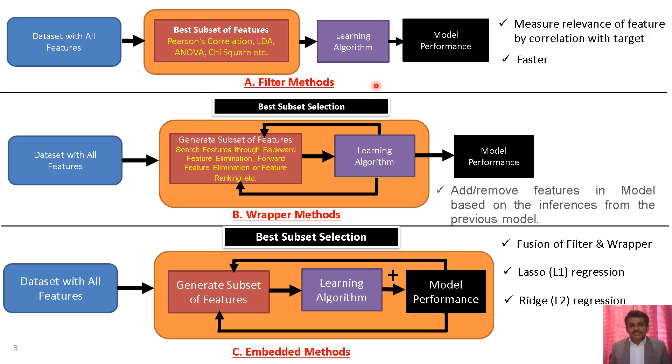Filter methods measure the relevance of features by correlation with the target class. This method of feature selection is faster.